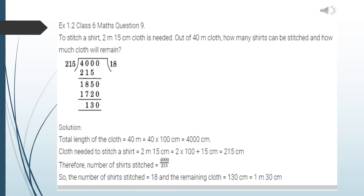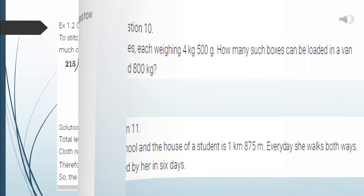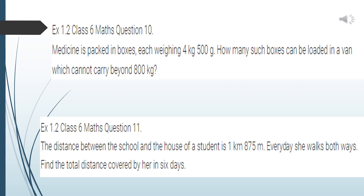Cloth needed per shirt = 2 m 15 cm = (2 × 100) + 15 = 215 centimeters. For the number of shirts, divide 4000 by 215. We get quotient = 18 and remainder = 130. So number of shirts stitched = 18 and cloth remaining = 130 centimeters, which is 1 meter 30 centimeters. Students, the next three questions are related to this — I am giving them as homework, try to solve them.